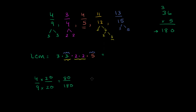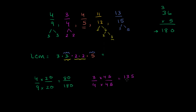Now let's do the same thing for 3/4. What do we multiply the denominator by to get to 180? It's 45 — because 4 times 40 is 160, and 4 times 5 is 20, and 160 plus 20 is 180. So if we multiply the denominator by 45, we also multiply the numerator by 45. 3 times 45 is 120 plus 15, which is 135. So 3/4 equals 135 over 180.